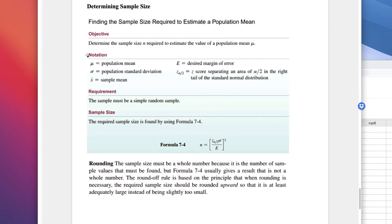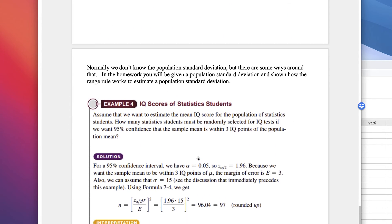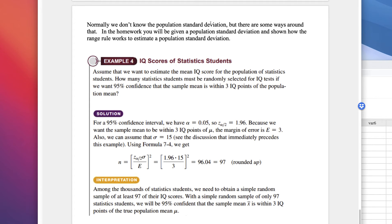Now we're going to determine sample size, just like in 7.1 — how many people do we need to survey to get information for our mean? The formula is: n equals z sub alpha divided by 2 times the standard deviation, divided by e, all squared. We have e as the desired margin of error and a z score here. Round up — the sample size must be a whole number.